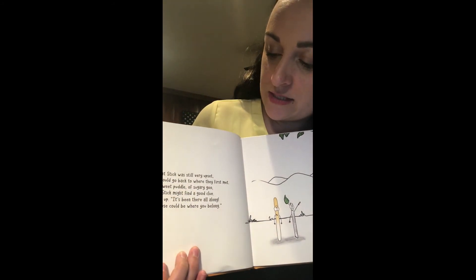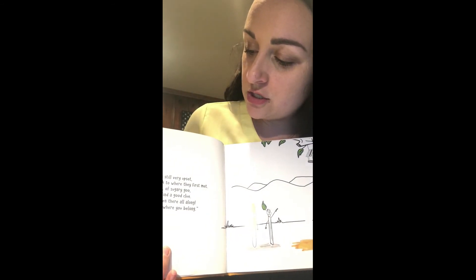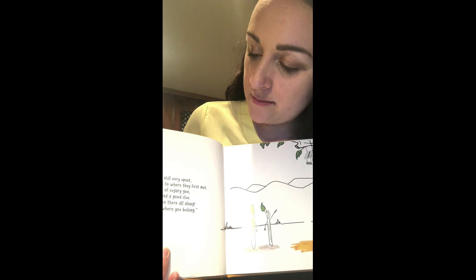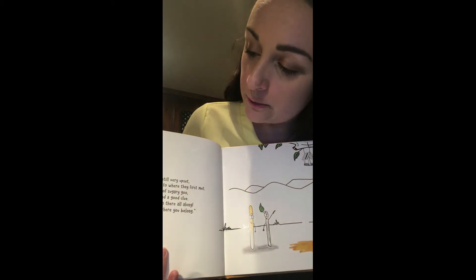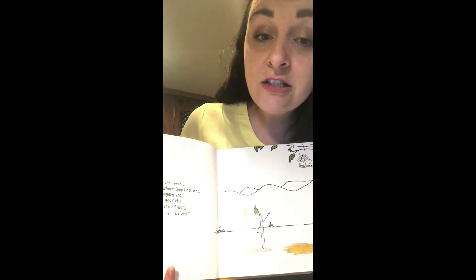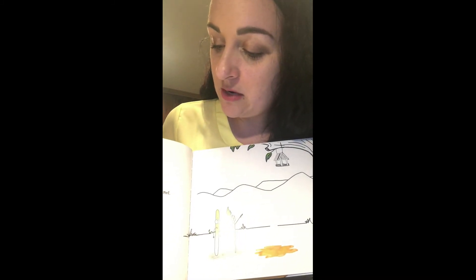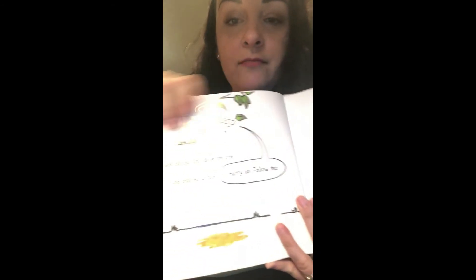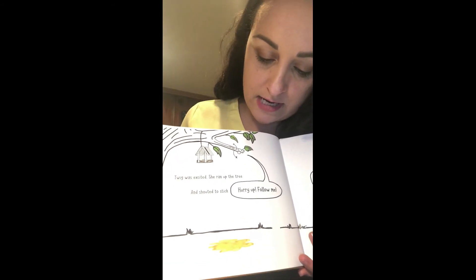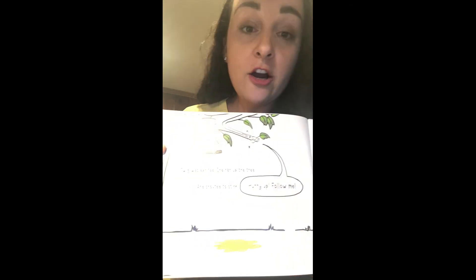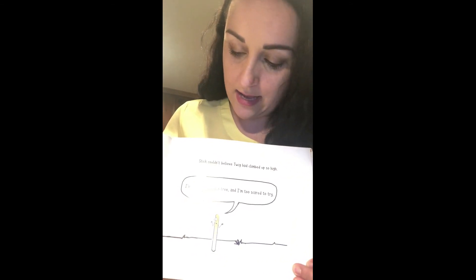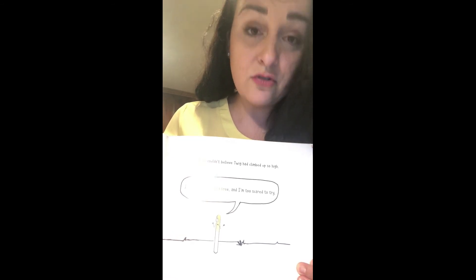Twig saw that Stick was still very upset, so she thought they should go back to where they first met — back at the sweet puddle of sugary goo. Twig thought Stick might find a good clue. Then Twig looked up: "It's been there all along. That little stick house could be where you belong." Twig was excited — she ran up the tree and shouted to Stick: "Hurry up, follow me!" Stick couldn't believe Twig had climbed up so high. "I've never climbed a tree and I'm too scared to try."